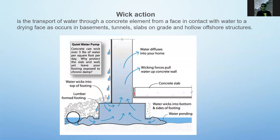This is typical in the base of basements and tunnel slabs in hollow offshore structures. Water on the side of the structure exposed to water will be collected by the lower part frequently exposed to water, and it will rise along the wall through wicking action. You can see traces of moisture on that side because of the wicking action, and there will be ponding of water underneath the concrete slab, as water transfers from one side to the other. This should be prevented.